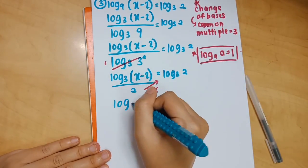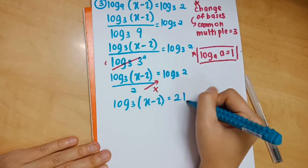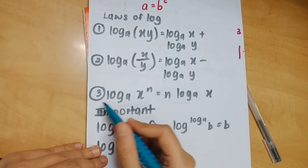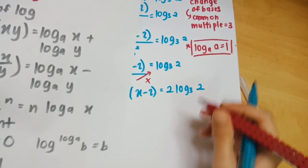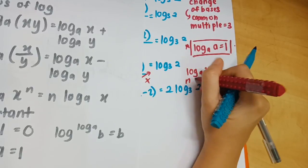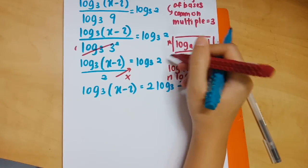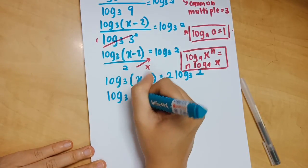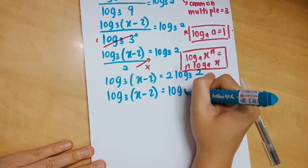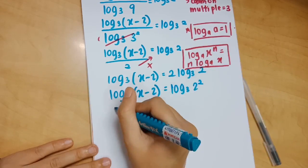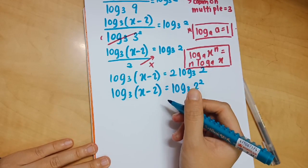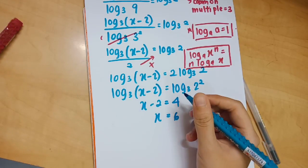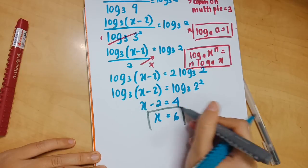Now referring to the third important rule — log_a(x^n) = n·log_a(x) — you bring the 2 in front of log_3(2) up as a power, giving log_3(2²). Now that both sides have the same base, log_3, you can compare the arguments directly and get your answer.